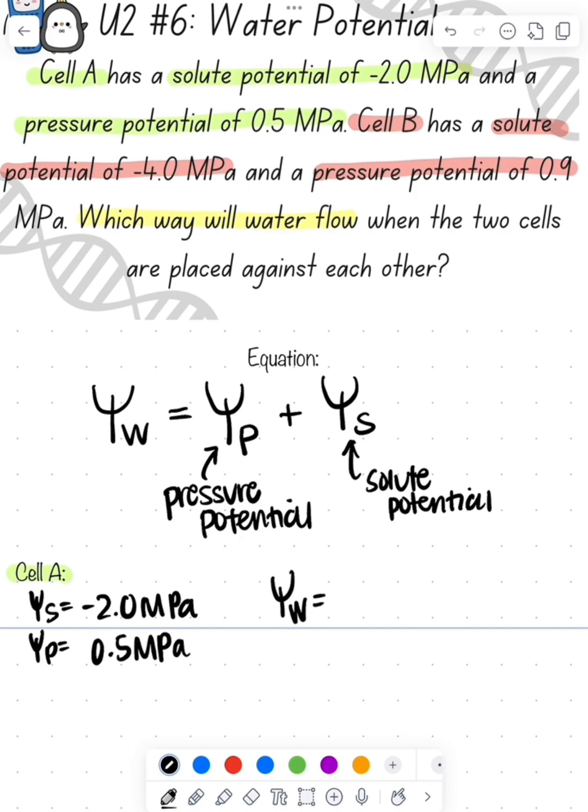If we substitute this into the equation, that means we have 0.5 plus negative 2 megapascals, which gives us negative 1.5 megapascals for cell A.